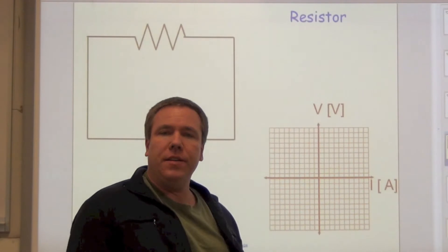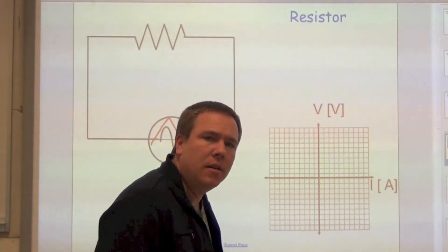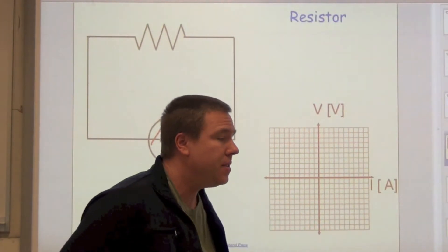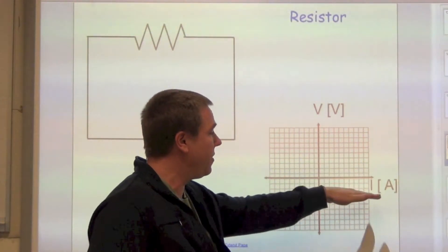Voltage versus current is the plot. So what should this look like if we have a resistor of 10 ohms? We should see a slope for this voltage versus current.